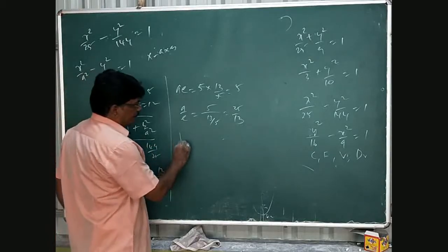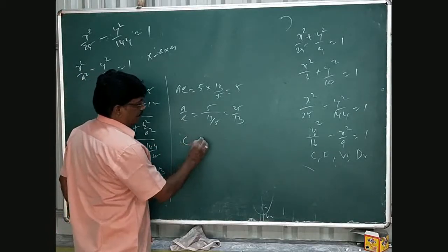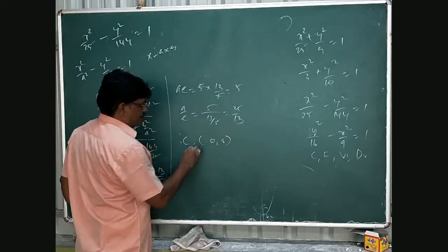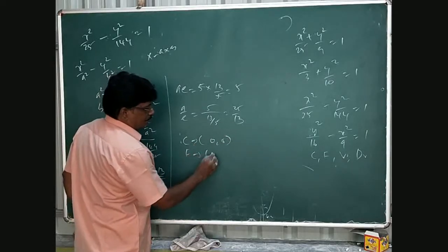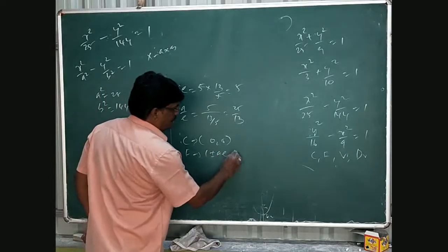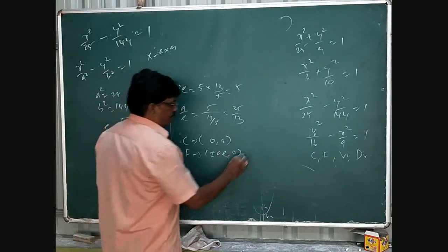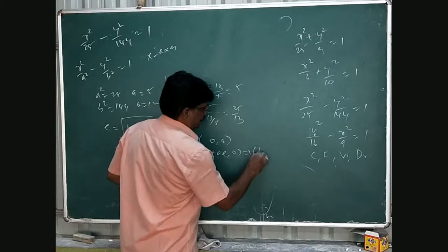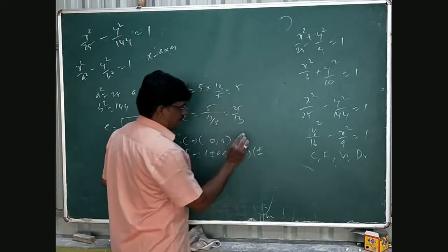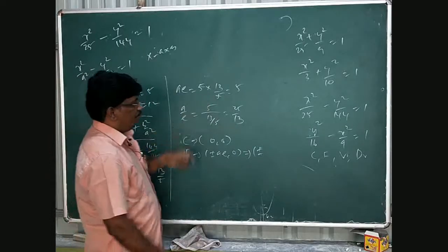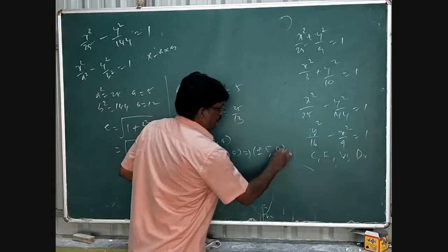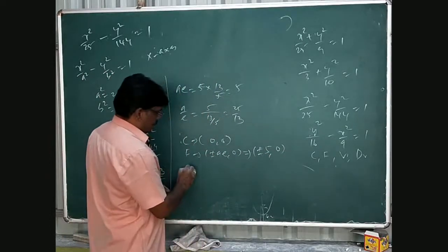Now, same thing. First center is 0, 0. Then focus, plus or minus ae comma 0. Ellipse and hyperbola, same formula, no need to change anything. If you know the one thing means you can do, only e value will be changes. ae value is what, ae is 5, so 5 comma 0, plus or minus 5 comma 0, and vertex.